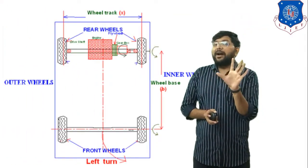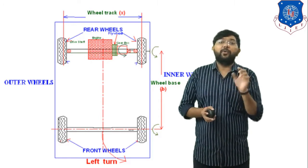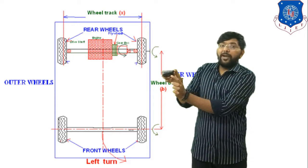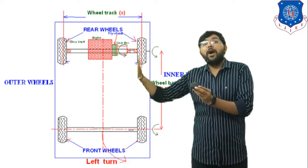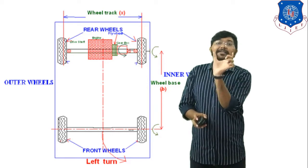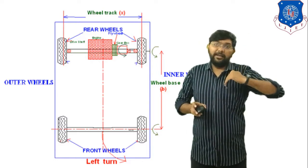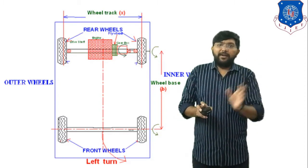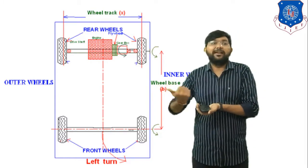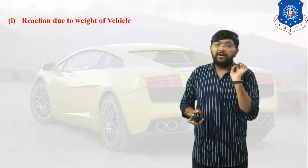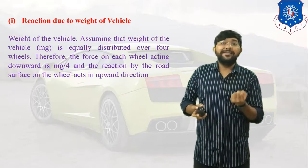This is the simple line diagram, a top view of the car. The car tries to take a left turn. When the car takes a left turn, the two left wheels are considered inner wheels and the two right wheels are outer wheels. The wheel track (x) is the distance between the two front wheels, and the wheel base (b) is the distance between the front and rear wheels. When the car takes a left turn, the centrifugal force acts in the outward direction. We now derive some basic equations.